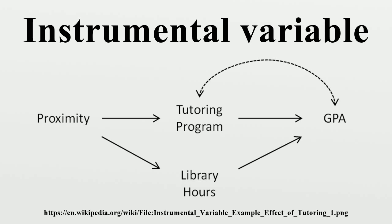Traditionally, an instrumental variable is defined as a variable z that is correlated with the independent variable x and uncorrelated with the error term u. However, this definition suffers from ambiguities in concepts such as error term and independent variable, and has led to confusion as to the meaning of the equation itself, which was wrongly labelled regression.